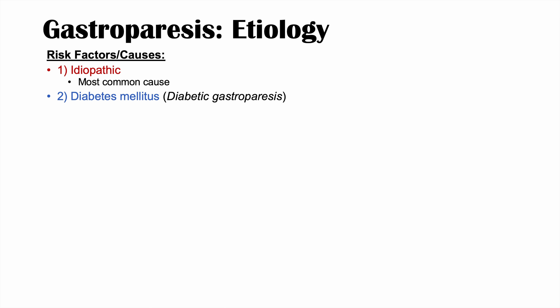The second main category of causes is diabetes mellitus, leading to what we call diabetic gastroparesis. When comparing type 1 versus type 2 diabetes, type 1 diabetics have a worse clinical presentation with worse diabetic gastroparesis.